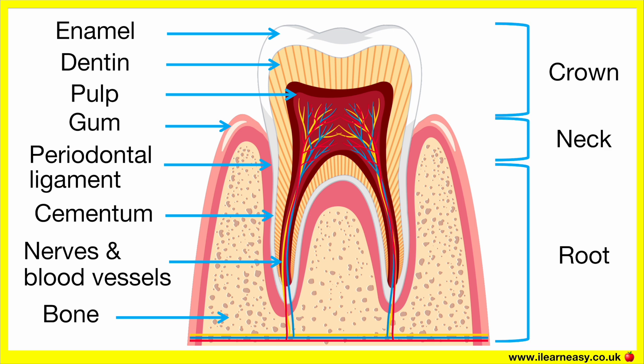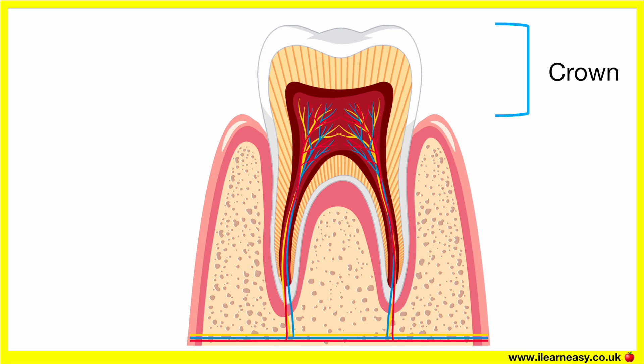Crown. The crown is the visible part of the tooth above the gum line. The crown is responsible for chewing and grinding food. Its hard surface is covered by enamel, which protects the tooth from wear and decay.